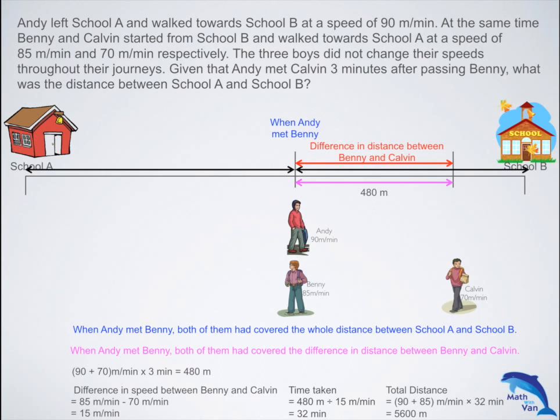You can check your work: when Andy met Calvin, which was 3 minutes later, they also covered the whole distance between school A and school B. So you take the combined speed of Andy and Calvin multiplied by 35 — because it was 3 minutes later — and you'll get the same answer: 5,600 meters.